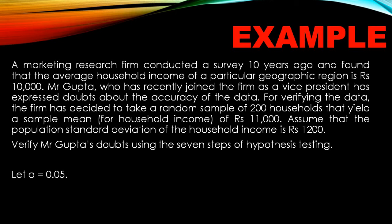For verifying the data, the firm has decided to take a random sample of 200 households that yield a sample mean for household income of rupees 11,000. This is much greater than the required sample size of 30, so obviously the z test fits. Assume that the population standard deviation of the household income is rupees 1200. Verify Mr. Gupta's doubts using the seven steps of hypothesis testing, and let alpha be equal to 0.05.